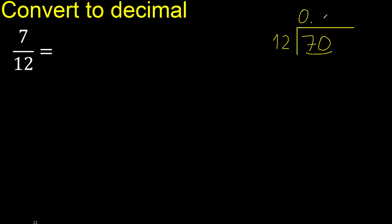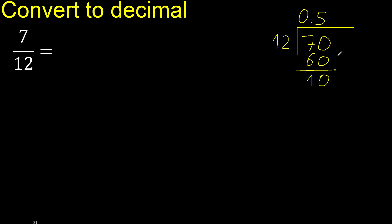12 multiplied by 6 is greater, so multiply by 5 — that's 60. Subtract, and since there is no next number, complete with 0. So we have 0 point, and now work with 100. Find the number that 12 multiplied by gives nearest to 100.